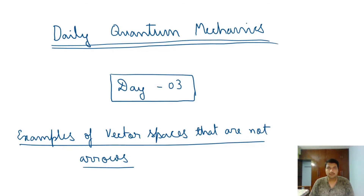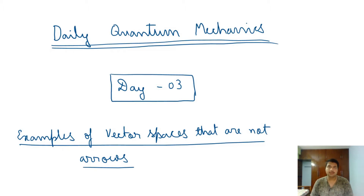Hello guys, welcome to Physics Grad. This is Day 3 of Daily Quantum Mechanics, and today we are going to see some examples of vector spaces whose elements are not arrows that you are already familiar with.